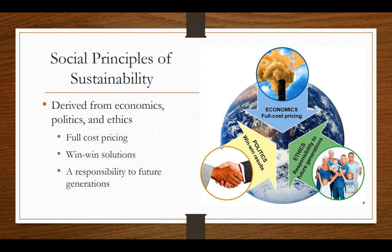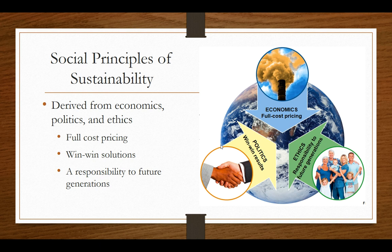We also have social principles of sustainability, derived from economics, politics, and ethics. When you combine all three, it's called the triple bottom line, which shows the intersection of sustainability factors. The first social principle is full cost pricing — including the harmful and environmental costs of goods and services. For example, at the gas station you pay a small price, but with full cost pricing we could impose a green tax on externalities such as the environmental cost of drilling or the air pollution caused from burning gas.